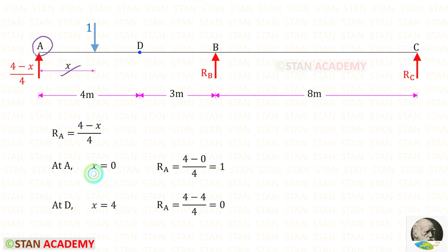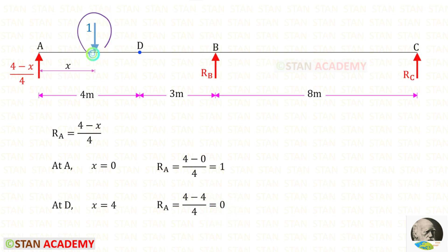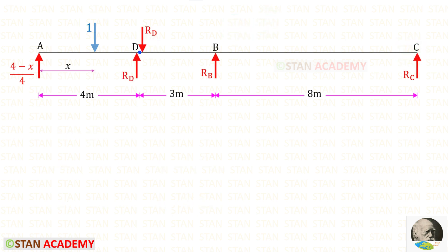At point A, X will be 0, so RA will be 1. At point D, X will be 4, so RA will be 0. When the unit load moves from D to C, RA will be 0.